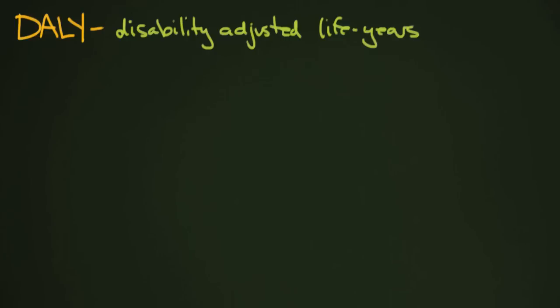life years. And what does that mean? Well, disability-adjusted life years are a measure of the health of a group of people, or maybe the health of an individual, but generally it's for groups.